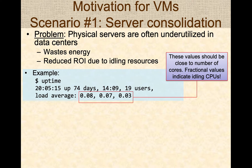For example, you can run the uptime command on a Linux server and it will show how much time it's been up and what the load averages have been. On a fully utilized four-core machine, you would ideally see values like 3.9 or 3.8. But here you see fractional values, clearly indicating that the CPUs are idling and not being effectively used — an example of a server that is underutilized, wasting energy, and not providing the return on investment you'd expect.